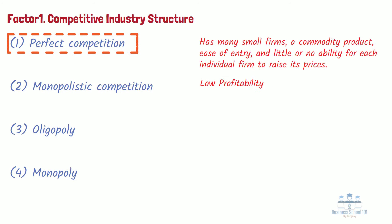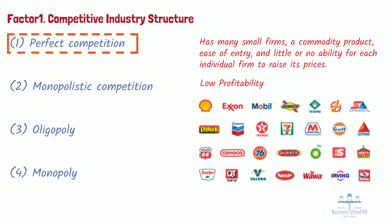Although perfect competition is a rare industry structure in its pure form, markets for commodities such as natural gas, copper, and iron tend to approach this structure.